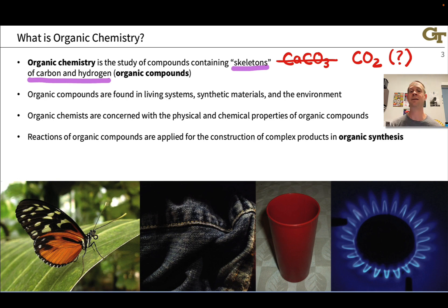And organic compounds are found everywhere. Living systems, they're the most important class of compounds in biochemistry. Synthetic materials, organic polymers are found everywhere. The clothes you're wearing, the car you're driving, absolutely everywhere. And of course, the environment. Organic compounds are important aspects of our natural world as well.